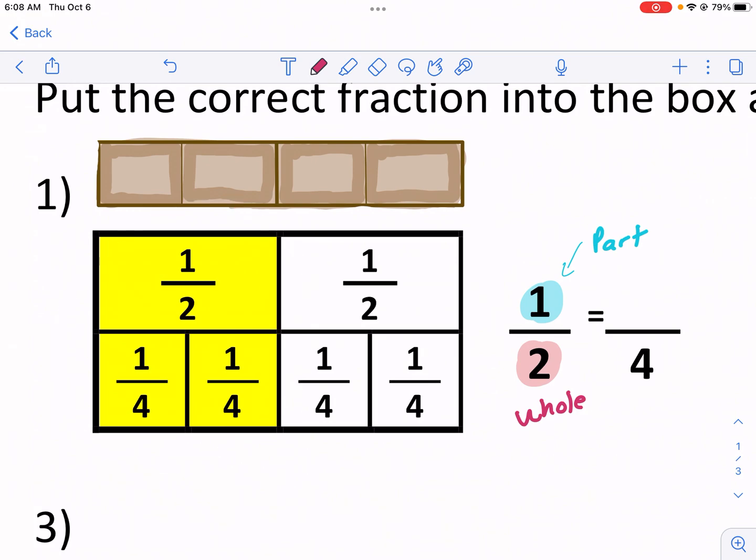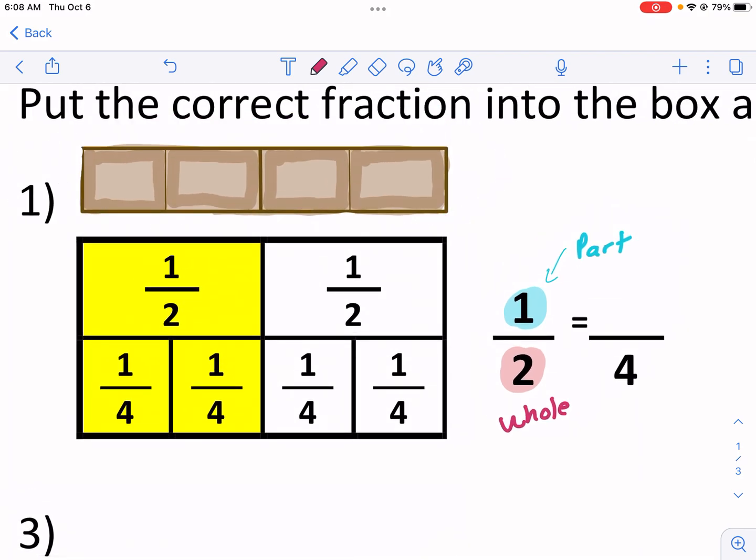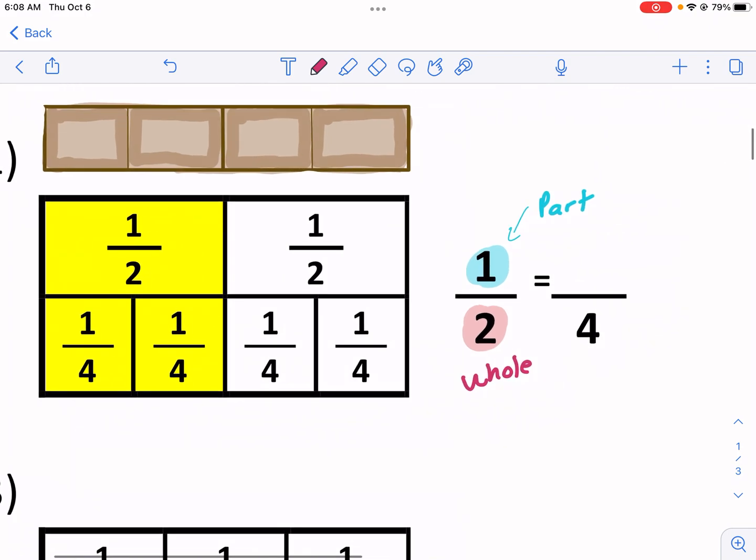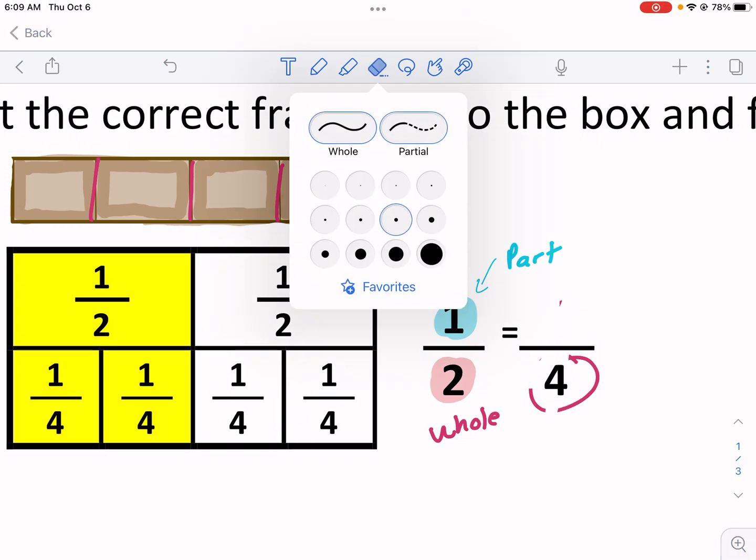Now, what does that mean? Well, I like to think of it in terms of food. Food is the easiest way to think of fractions. If we're talking about half, as is highlighted right here, we're talking about half the candy bar. Now, if we split up into fourths, we can see that we have one, two, three, four out of four parts out of the entire candy bar, which is the whole.